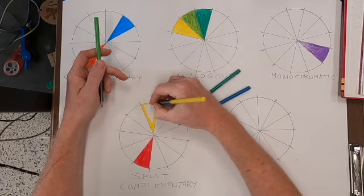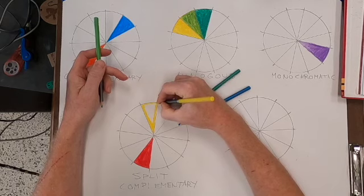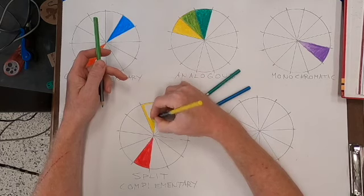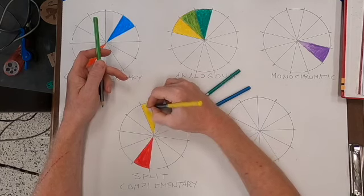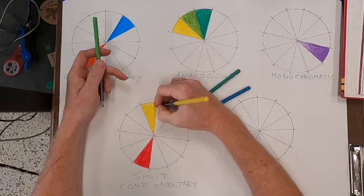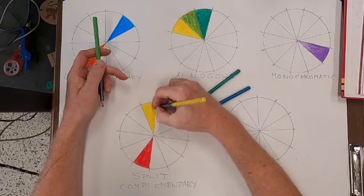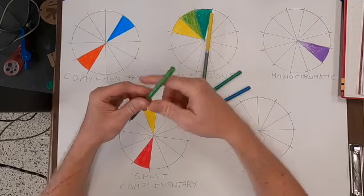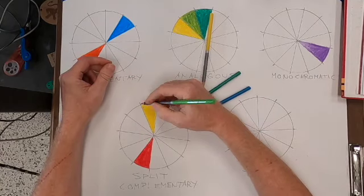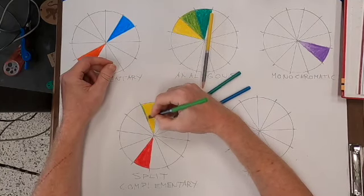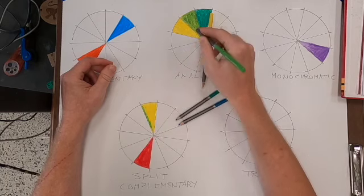I usually put the lighter color down first because sometimes it's hard to cover up a dark color with a light color. Generally, it's a lot easier to cover up a light color like yellow with some green. I don't want to cover it all the way because it's supposed to be yellow-green. It's supposed to be mixed.